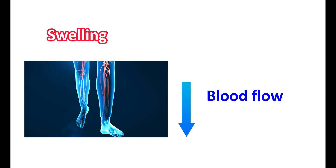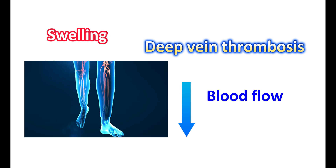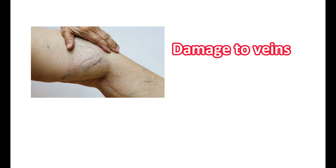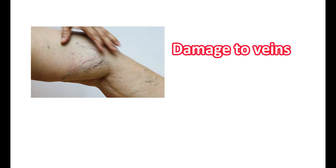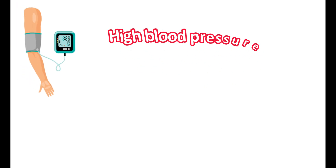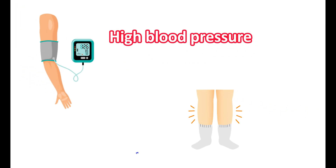A drop in blood flow may be due to the formation of a clot in the deep veins. This condition is called deep vein thrombosis, which arrests blood flow to the veins, leading to unilateral leg swelling. It results in pain, redness, and a feeling of warmth in your legs. Damage to the veins also fails to return blood to the heart, resulting in the pooling of blood in the leg veins. This condition is called varicose veins, which results in swelling in the legs.